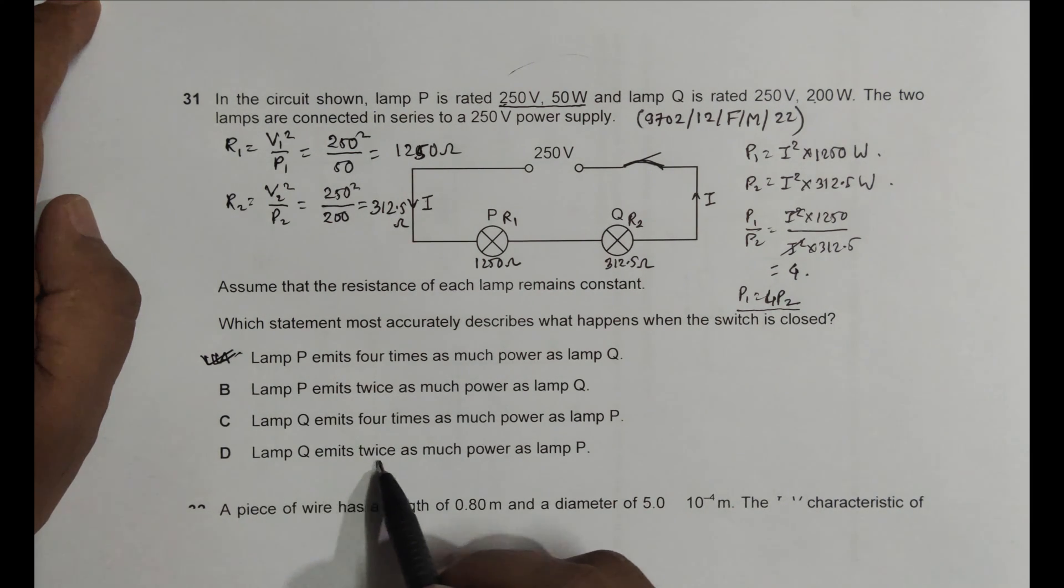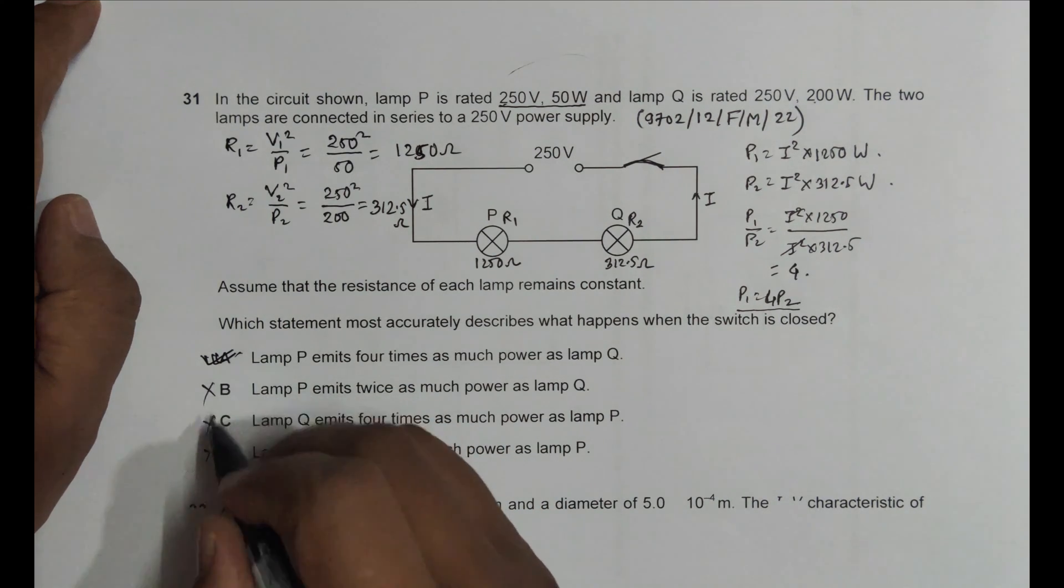So this is the correct choice, 4 times as seen here. Twice, not true. Lamp Q 4 times, not true. Lamp Q 2 times, not sure. So only correct choice is choice number A. Thank you.